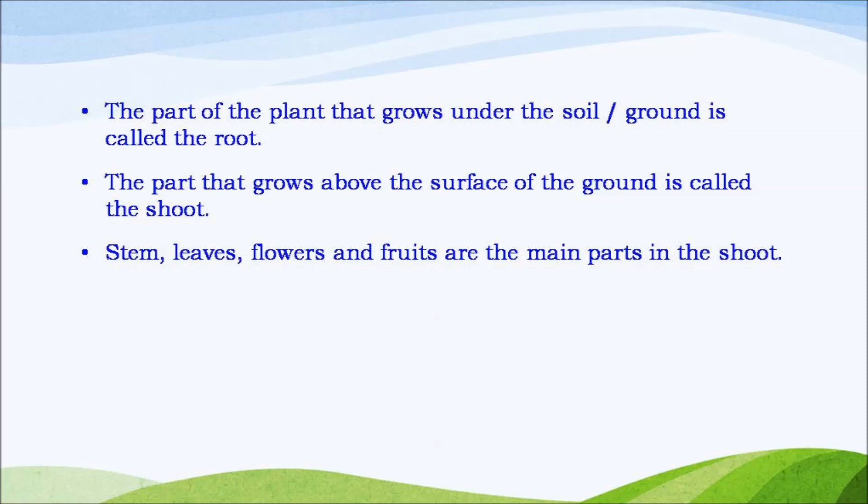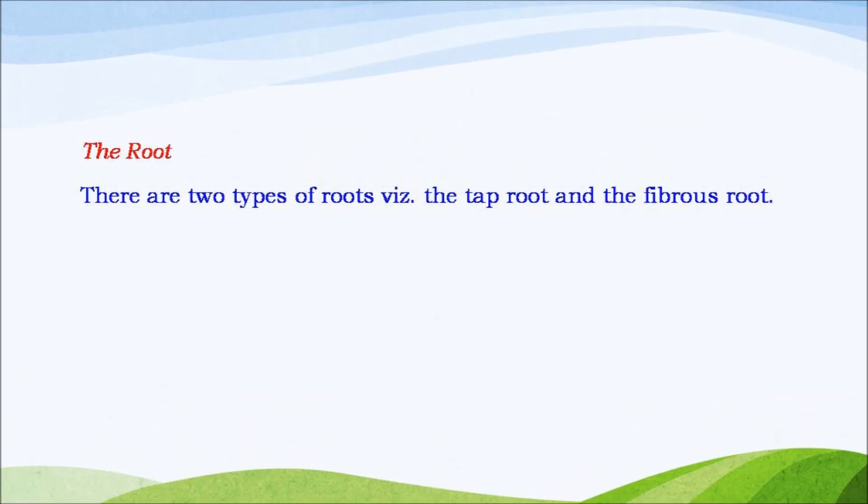Stem, leaves, flowers and fruits are the main parts of the shoot. Let us learn about the root. There are two types of roots, namely the tap root and the fibrous root.